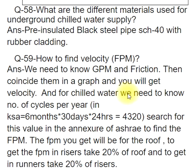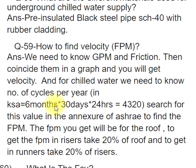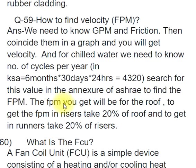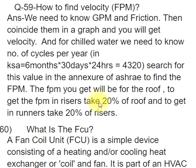For chilled water, we need to know the number of cycles per year. In KSA equals 6 months × 30 days × 24 hrs = 4,320. Search for this value in the annexure of ASHRAE to find the FPM. The FPM for the roof: to get FPM in risers take 20% of roof value; to get FPM in runners take 20% of risers.